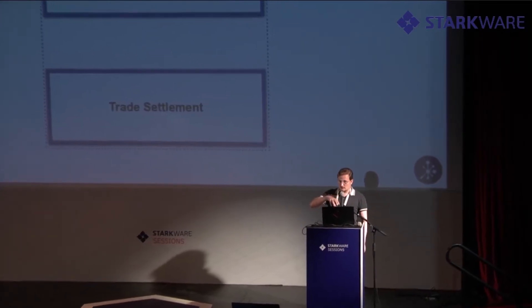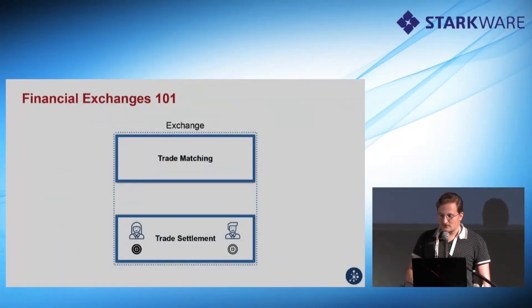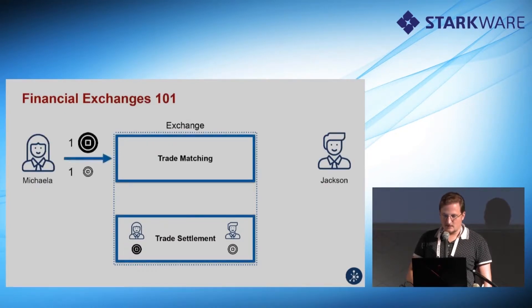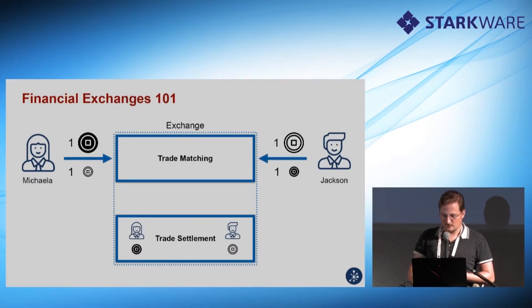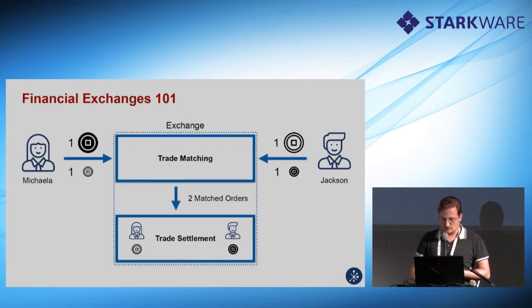In this talk we're going to focus on an operator model where we have an order book. Let's assume we have two traders: Mikaela, who has some black coin, and Jackson, who has some white coin, and they would like to trade these coins. Mikaela puts in an order to sell black coin and get white coin, and the same is done by Jackson. The matching system can then say it has two matching orders and forward them to the trade settlement layer, where the trade is executed.